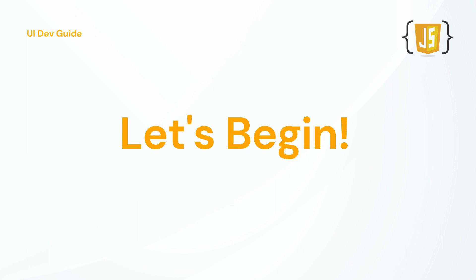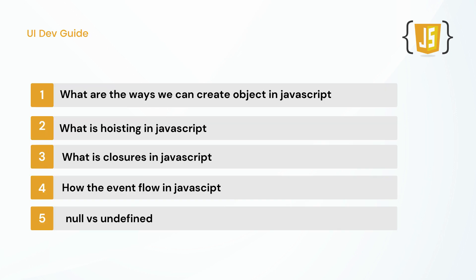The first question is: what are the ways we can create an object in JavaScript? We have a couple of methods — we can directly assign one object to another object. This is one way. We can also use a constructor pattern to create objects. You have to just check how to create multiple objects in JavaScript and create some examples you can showcase in the interview.